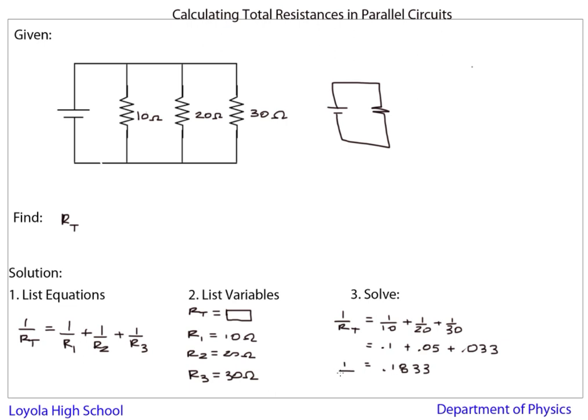That's 1 over RT though. We want to find RT. So we have 1 over RT. So if we invert and multiply, and I'll do it right over here so we have a little more room. RT therefore is equal to 1 over 0.1833.